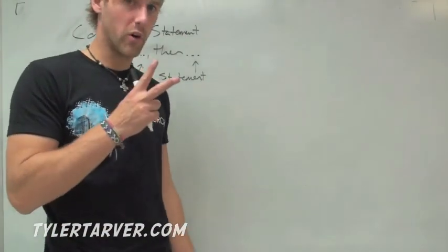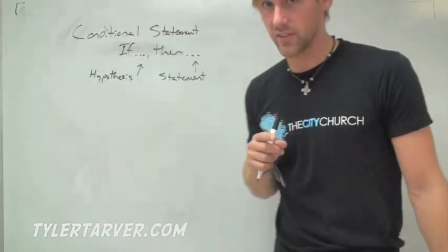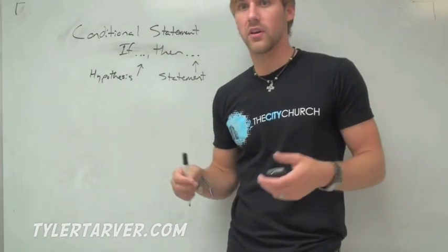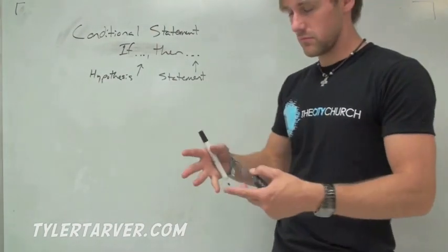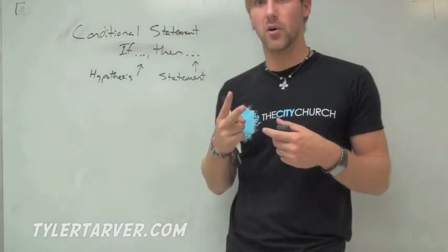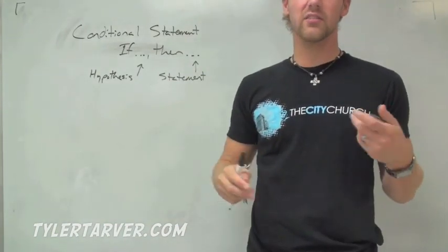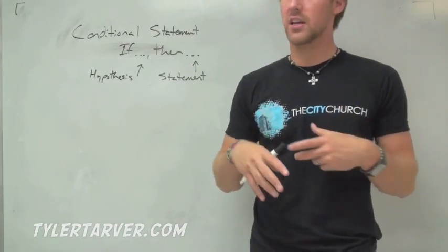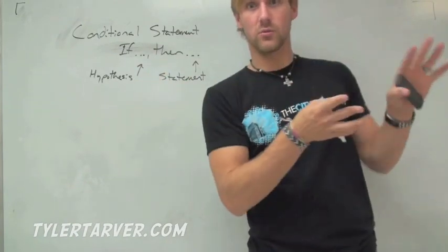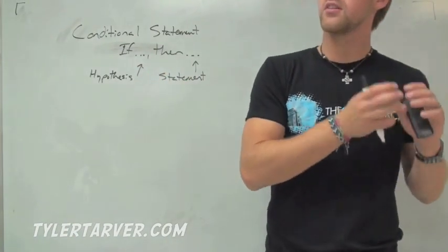There are two parts to a conditional statement. One is the hypothesis — that's what we're saying; if this happens. Then the second part is the conclusion — it says then this happens. So the hypothesis comes first: if these are the circumstances, then this is the result.